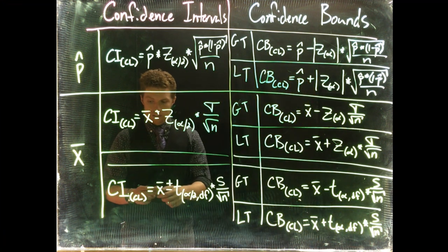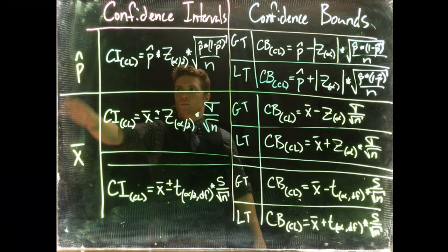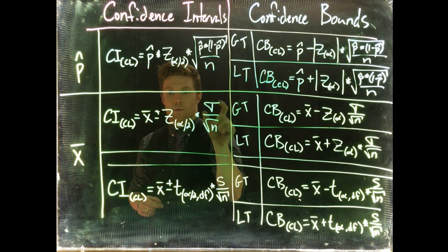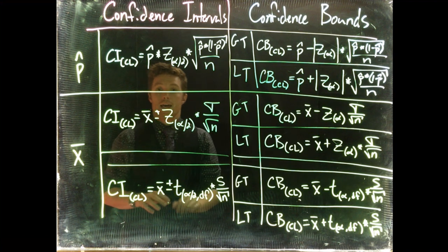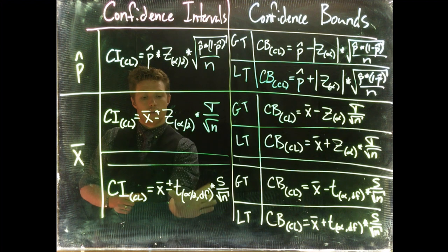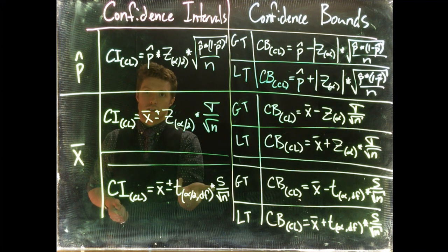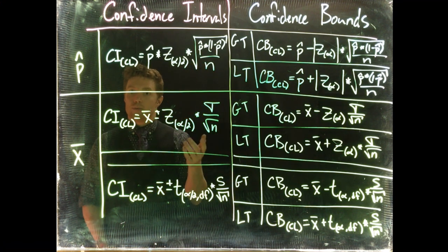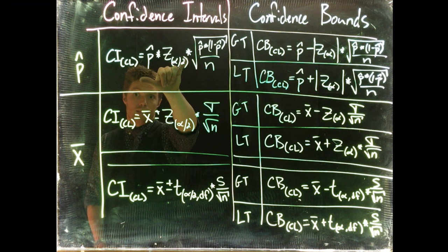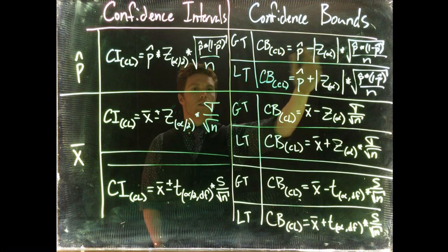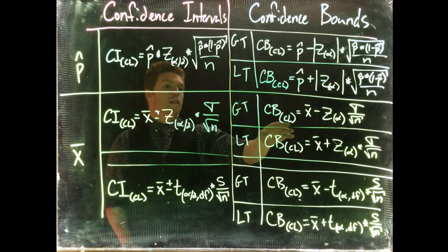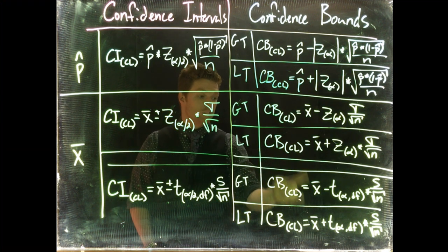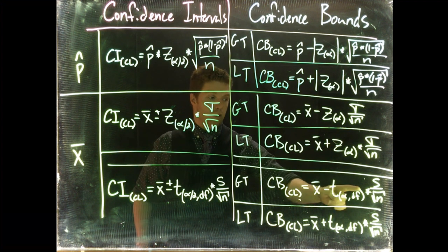So that was a lot, but let's do a quick overview. On the confidence intervals side, we've got proportions and means. For means, if we know the population standard deviation we use a z-score; if we don't, we use the sample standard deviation with the t distribution. On the confidence bounds side, we have greater than and less than for both proportions and means, with the same z vs. t split based on whether we know the population standard deviation.